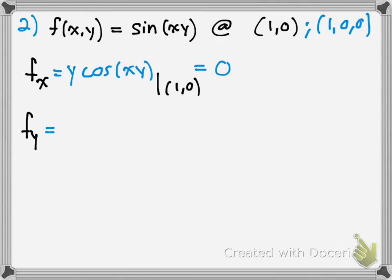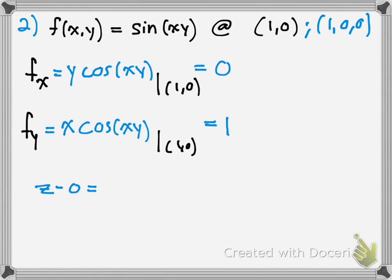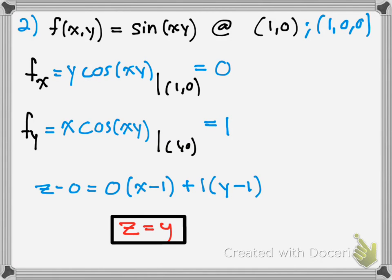The partial derivative with respect to y: the derivative of sine is cosine(xy), and treating x as a constant, x comes out, giving x cosine(xy). Evaluated at (1, 0), you get 1 times cosine(0), and cosine of 0 is 1. Now plug into the formula: z minus 0 equals 0 times (x minus 1) plus 1 times (y minus 0), which simplifies to z equals y. That is the tangent plane at that point.